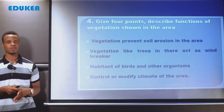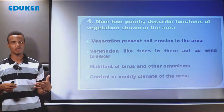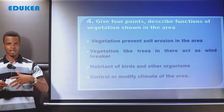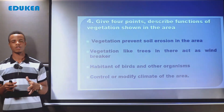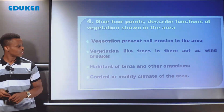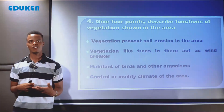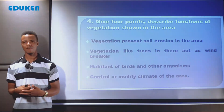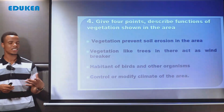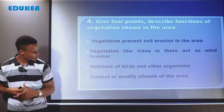The second function of vegetation is acting as a windbreaker. When wind blows from a high pressure region to a low pressure region with high speed, the trees in the area act as a windbreaker, reducing the speed of the wind and minimizing the impact of wind on properties. The third function is providing habitat for birds and other organisms, because birds and other organisms live in trees rather than in grass or human houses. So the vegetation provides habitat for other organisms.